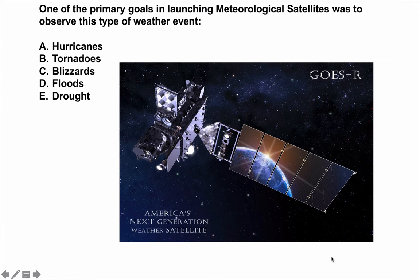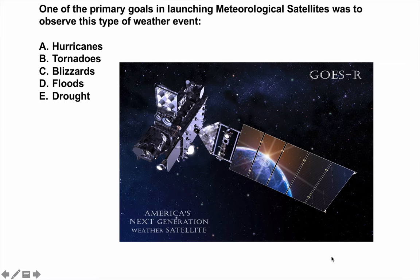Let's talk about satellites specifically with their ability to detect different types of severe weather. One of the primary goals in launching meteorological satellites was to observe a specific type of weather event — was it hurricanes, tornadoes, blizzards, floods, or drought? We've launched two satellites as part of the GOES-R project — GOES-16 and GOES-17 — in 2017 and 2018. The G in GOES stands for geostationary, meaning these satellites are about 36,000 kilometers away from Earth, staring down and taking very high resolution images. When we first launched these back in the mid-1970s, one of the primary targets was hurricanes.